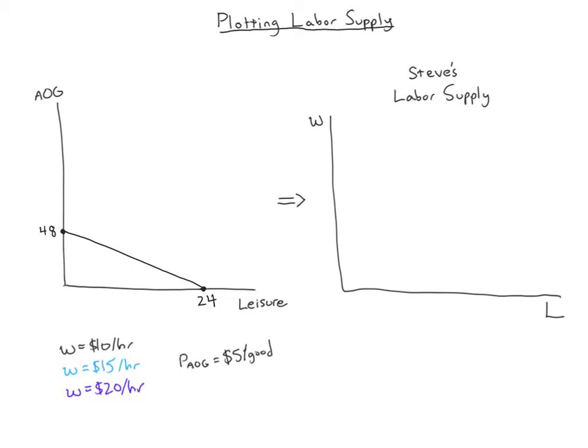Since the real wage is only two goods per hour — not very impressive — I decide as Steve to take a lot of leisure: 18 hours. That means I'm implicitly supplying just six hours of labor.